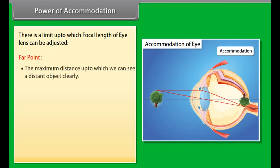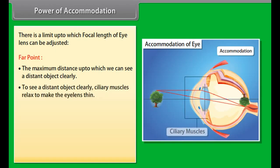Far point is the maximum distance up to which we can see a distant object clearly. To see a distant object clearly, ciliary muscles relax to make the eye lens thin. Near point is the least distance at which objects can be seen clearly without any strain. To see a nearby object clearly, ciliary muscles contract to make the eye lens thick.